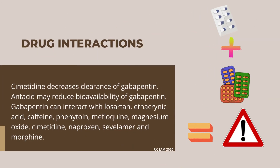Drug interactions: cimetidine decreases clearance of gabapentin; antacids may reduce bioavailability of gabapentin. Gabapentin can interact with losartan, ethacrynic acid, caffeine, phenytoin, mefloquine, magnesium oxide, cimetidine, naproxen, sevelamer, and morphine.